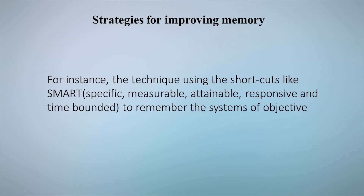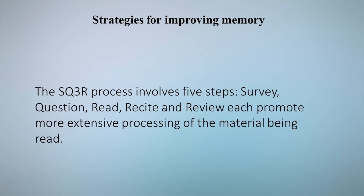For instance, techniques using shortcuts like SMART — Specific, Measurable, Attainable, Responsive and Time-bounded — help remember systems of objectives. The SQ3R process involves five steps: Survey, Question, Read, Recite and Review.